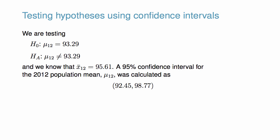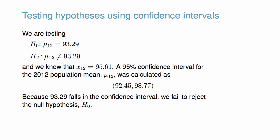Based on the data, a 95% confidence interval for the 2012 population mean was calculated as 92.45 to 98.77. Because the 2006 mean of 93.29 falls in the range of plausible values for the true mean race time in 2012, we cannot say the null hypothesis is implausible. That is, we fail to reject the null hypothesis.